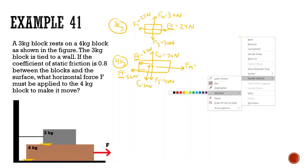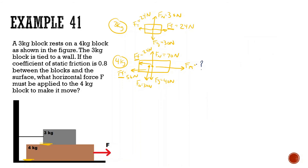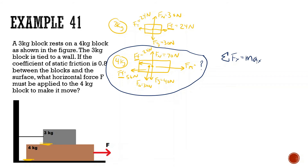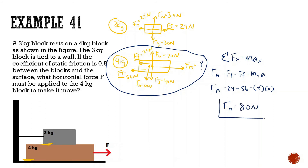Now let's look at what the applied force needs to be to start the block moving. Looking at the four kilogram block: sum of all forces in x equals mass times acceleration. Force applied minus the two friction forces equals mass times acceleration. Since it's just starting to move, acceleration is zero. So force applied equals 24 plus 56, which is 80 newtons.